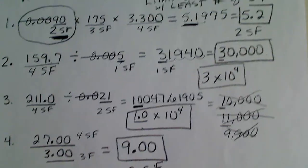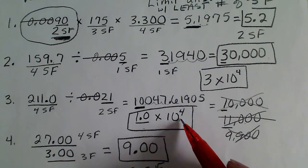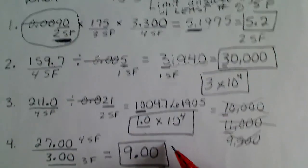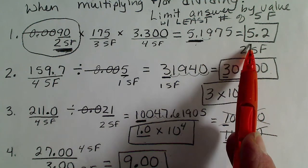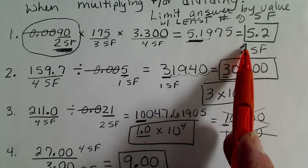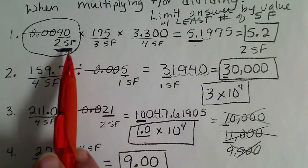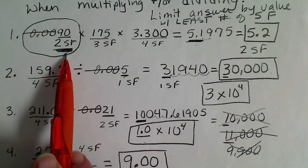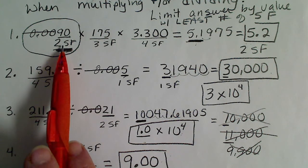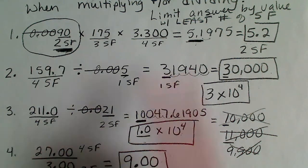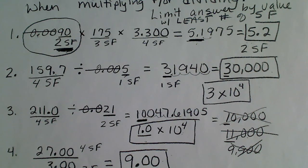Most of the time, the values we're working with don't run into these special circumstances. Most of the time it's a matter of just taking our value and rounding it properly — looking back at the factors we're multiplying or dividing, determining the least number of significant figures, and then rounding our answer to that same number of significant figures.